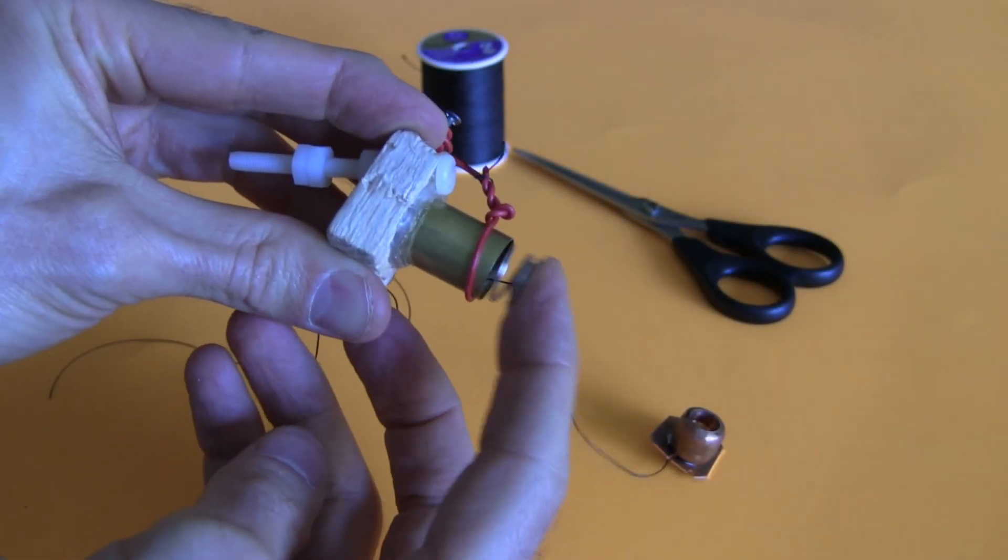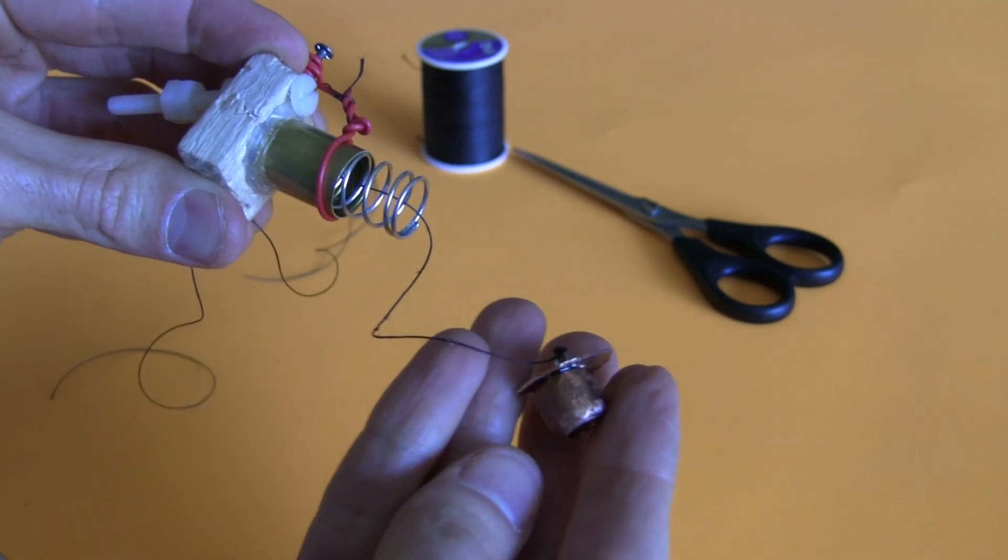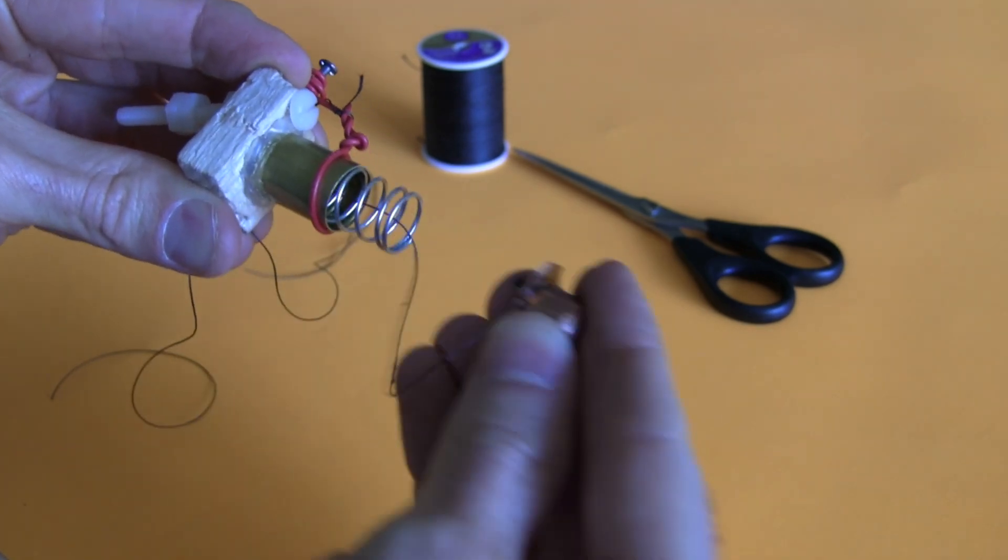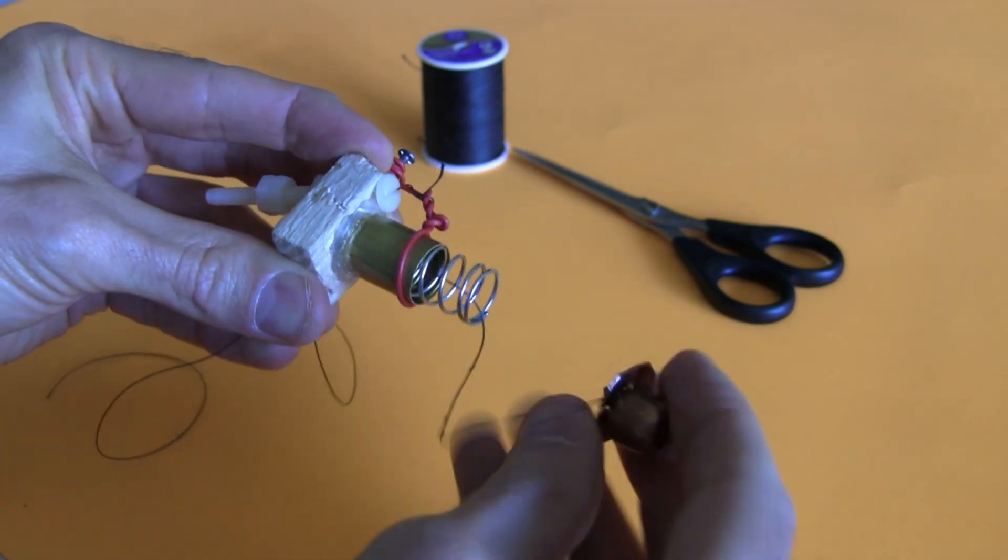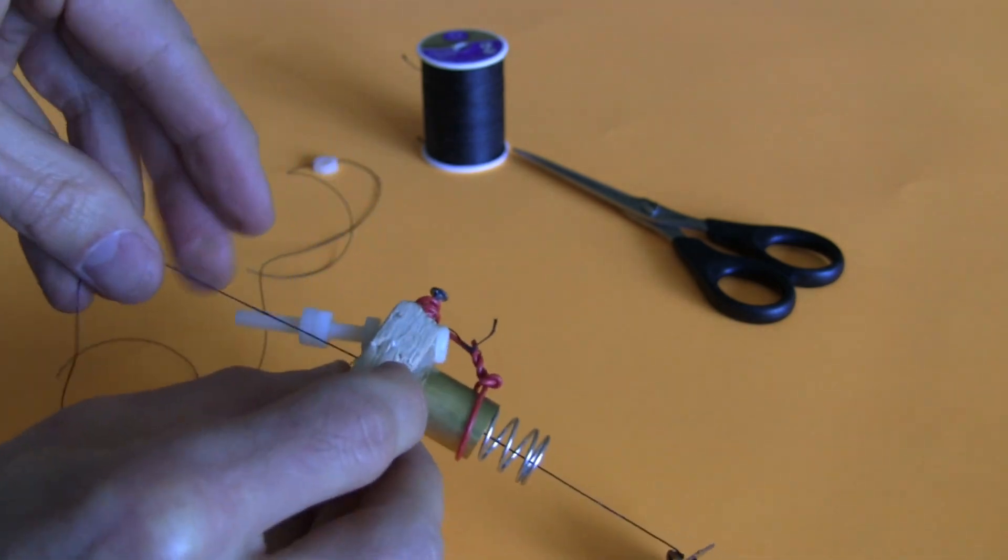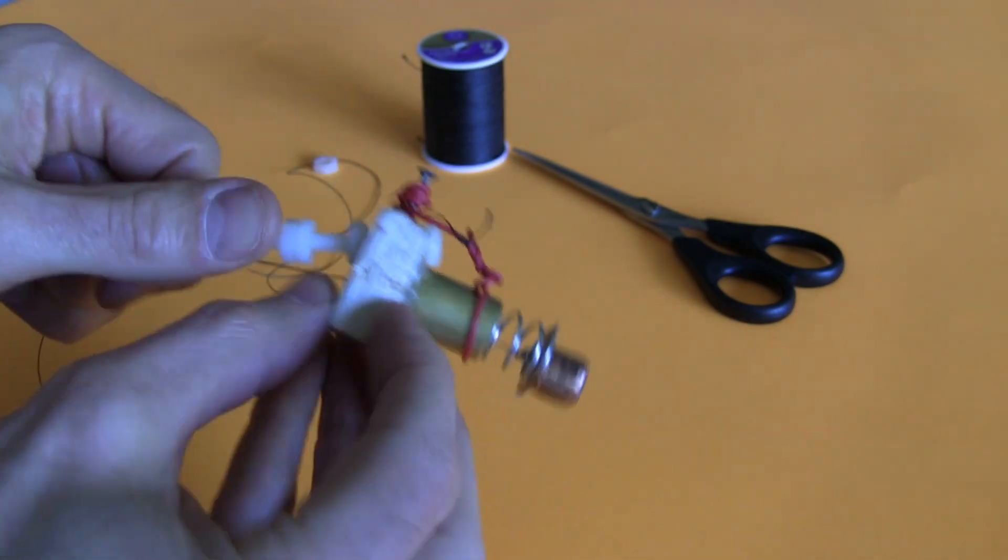This is the spring that's going to be compressed. This chunk of copper is the reaction mass that's going to be thrown away, and this thread right here that goes through the whole thing is what holds it all together.